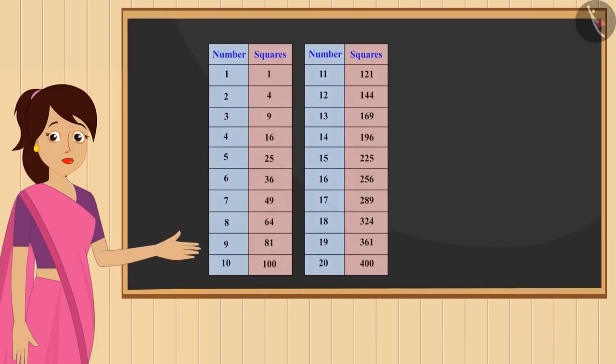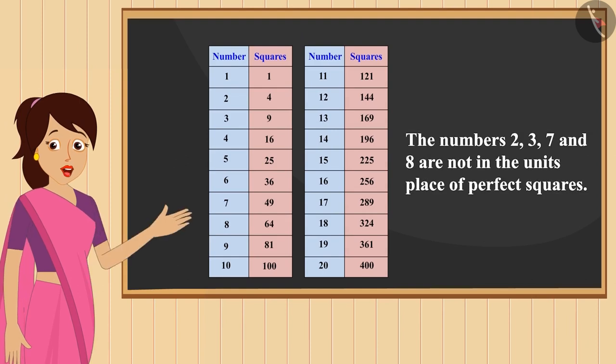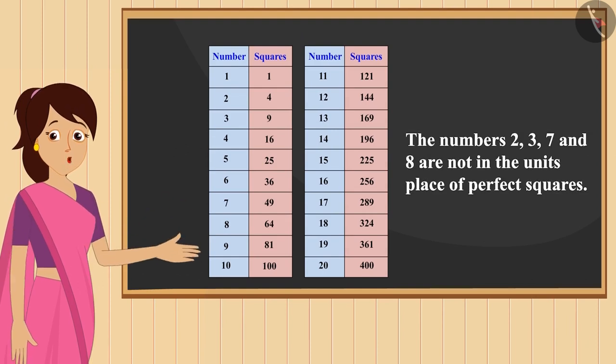Let us now find out about some more interesting numbers. You must have seen in this table of squares from 1 to 20 that the digits 2, 3, 7, and 8 did not appear even once in unit place of these squares.